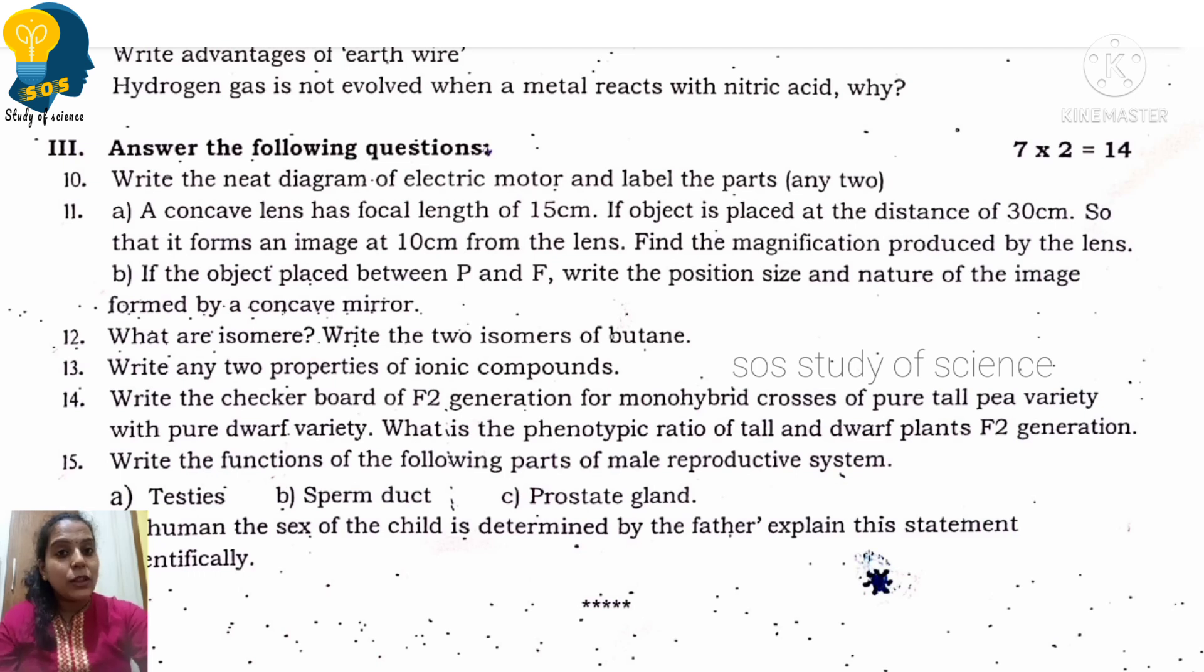Next question: write the Punnett square of F2 generation of a monohybrid cross. I have told you in crash course and other videos. They are asking about monohybrid F2 Punnett square. You can also include F1, it's not wrong. So they are asking to cross pure tall pea plant with dwarf pea plant. So capital T capital T and small t small t, when you cross, in F1 generation you will get all tall pea plants. But in F2 generation write the Punnett square. In F2 generation phenotypic ratio is 3 is to 1, that is 3 tall 1 dwarf. Genotypic ratio is 1 is to 2 is to 1. This concept I have explained. Dear students, Punnett square related questions you must practice 100%.